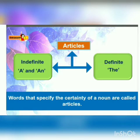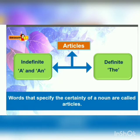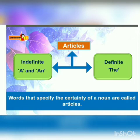You know what articles are. The words that specify the certainty of a noun are called articles — that means the words 'a', 'an', and 'the' are called articles. Actually they are demonstrative adjectives. You may also call them determiners, and they are used to point out or determine people or things, just like 'a boy' or 'a tree'.